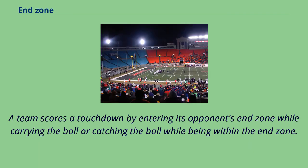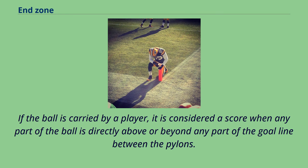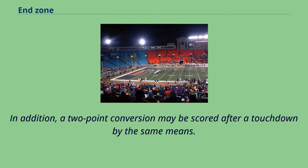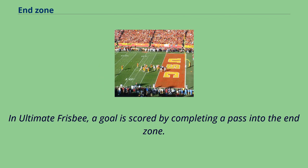A team scores a touchdown by entering its opponent's end zone while carrying the ball or catching the ball while being within the end zone. If the ball is carried by a player, it is considered a score when any part of the ball is directly above or beyond any part of the goal line between the pylons. In addition, a two-point conversion may be scored after a touchdown by the same means. In Ultimate Frisbee, a goal is scored by completing a pass into the end zone.